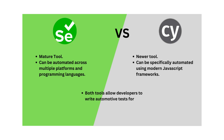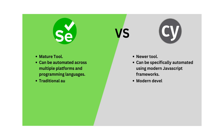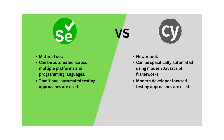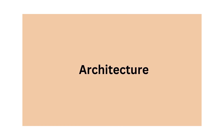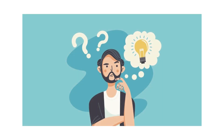Both tools allow developers to write automated tests for web applications, but they each have different approaches to testing. Selenium is based on the traditional automation testing approach while Cypress uses a modern developer-focused approach. Selenium provides a wide range of features and customization options while Cypress is simpler and more intuitive to use. Selenium is also better for cross-browser testing while Cypress is more focused on testing web applications built with modern JavaScript frameworks.